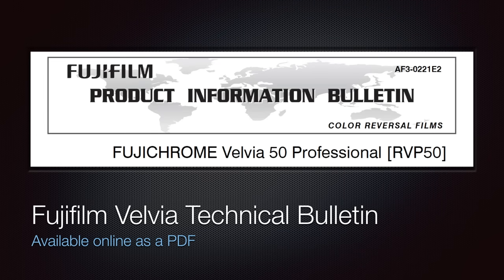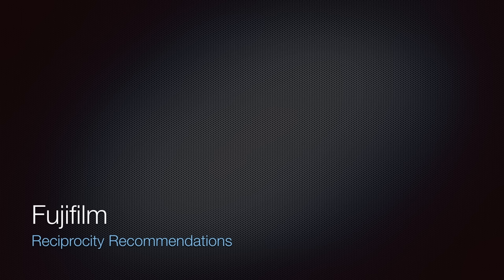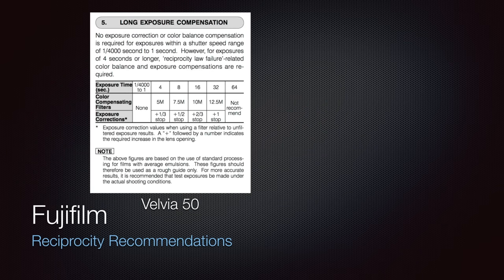The Fujifilm technical bulletin is a great resource for a wealth of product information. It is easily found on the web and downloadable as a PDF, and I would highly recommend reading it carefully. Once exposure becomes long enough, the sensitivity of the film to light slows down from what we would normally expect. In Velvia 50's case, that begins with exposures greater than one second, with Fujifilm not recommending exposures greater than 32 seconds. So does this mean that we have to purchase the color compensating filters suggested by Fujifilm and not expose the film longer than 32 seconds? With all due respect to Fujifilm, I do not follow these recommendations.